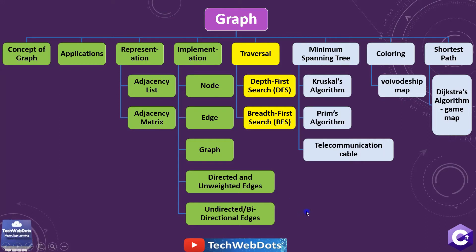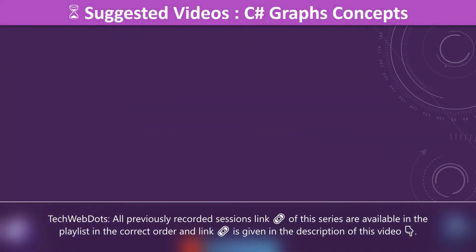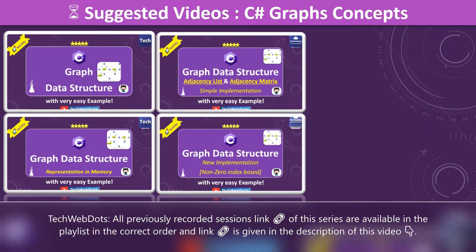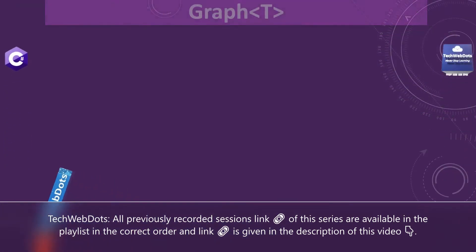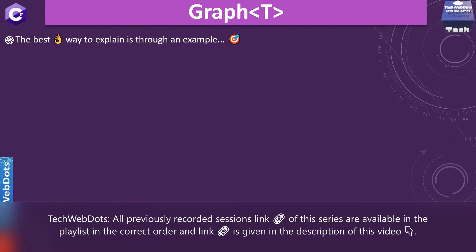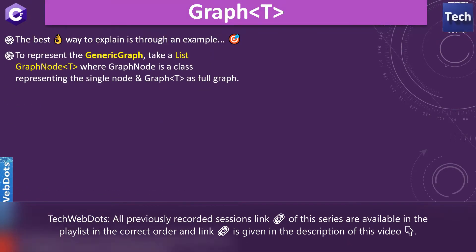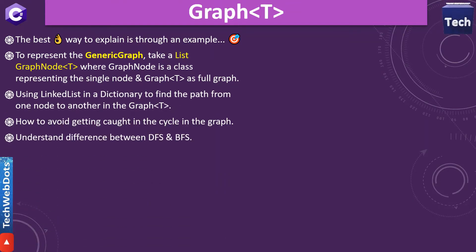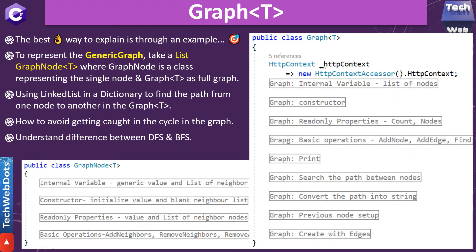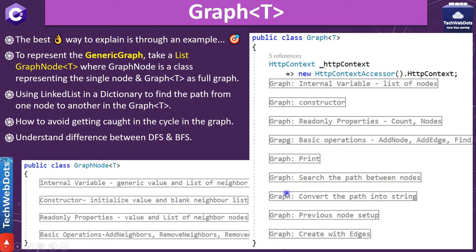Today we will discuss traversal with depth-first search and breadth-first search. I strongly recommend you to watch all previous videos which I've already shared on matrix presentation, non-zero index base, and the generic graph implementation. In the previous part I explained what a generic graph is and how you can implement the representation of the graph. This is a graph node which contains its internal variable, constructor, read-only properties, and basic operations. Today we are going to discuss graph search — the path between nodes.